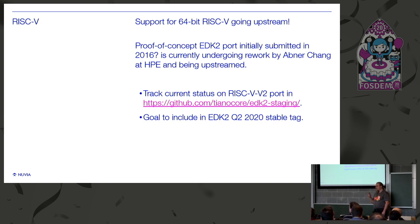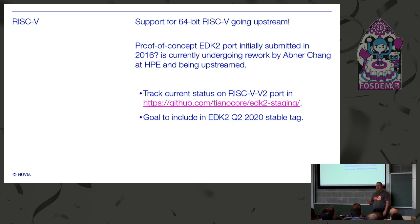RISC-V: support for 64-bit RISC-V is going upstream in EDK2. A proof-of-concept port was initially submitted in 2016 but was left alone until summer last year. We've been going through and reworking it — I've been reviewing it, and Abner Chang at HPE has been reworking and upstreaming it, also working with OpenSBI to make that easier to plug into the EDK2 port. You can track the current status on the RISC-V V2 port at the linked URL; if you wait a few days there will be the latest stage of things up there.